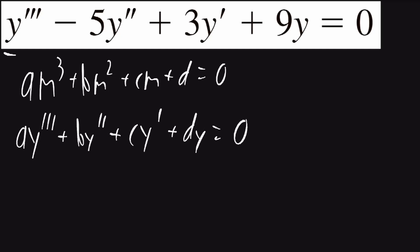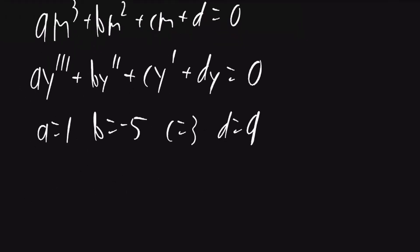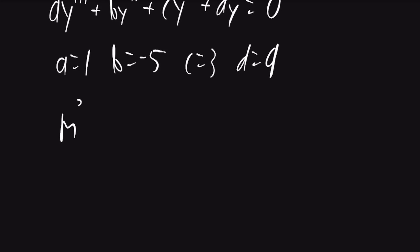The coefficient of y triple prime is 1, so a is going to be 1. The coefficient of y double prime is negative 5, so b is going to be negative 5. The coefficient of y prime is 3, so c is going to be 3, and the coefficient of y is 9, so d is going to be 9. So our auxiliary equation is going to be m cubed minus 5m squared plus 3m plus 9 equals 0.